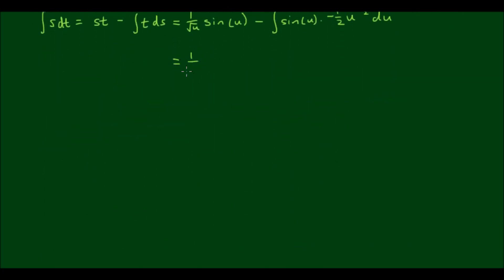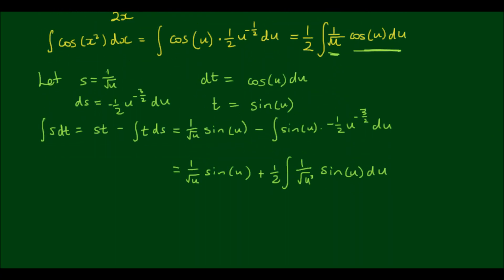Tidying this up, I'll get 1 over root u times sin(u) plus one half times the integral of 1 over u to the 3 over 2 times sin(u) du. And if we scroll back up a little bit, we can see that these two parts are very similar to each other. This integral we can't actually find a closed form for — it will keep on integrating forever, generating higher powers of u inside the square root and alternating sines and cosines.